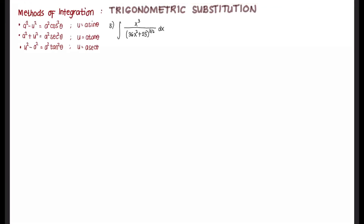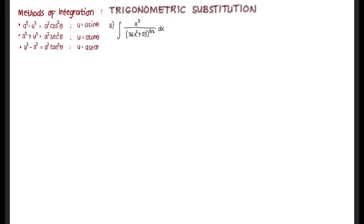In this video we use the method of integration by trigonometric substitution to evaluate the given integral. This is example number five — we are to evaluate the integral of x³ over (36x² + 25) raised to the power of three halves, dx. We have an algebraic integrand and we examine the pattern in the denominator.